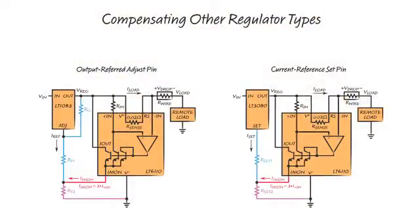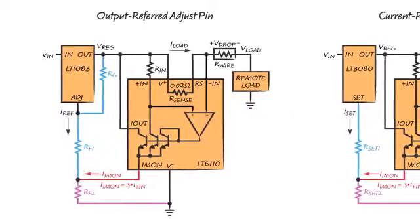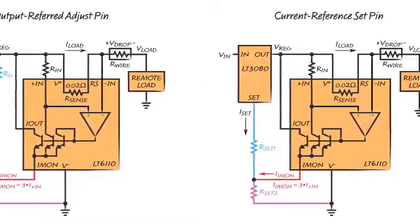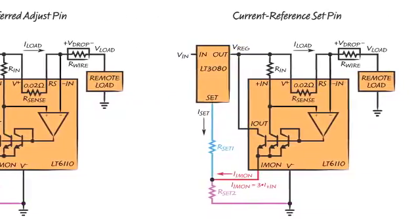The LT6110 can also provide a sourcing current via the I-MON pin to control a regulator with an output-referred adjust pin, such as the LT1083, or a regulator with a current reference set pin, such as the LT3080.